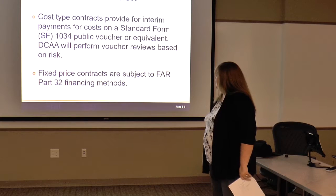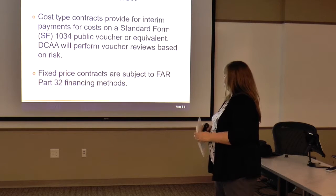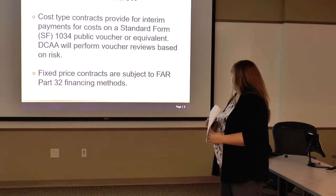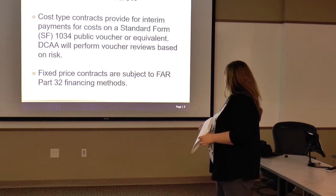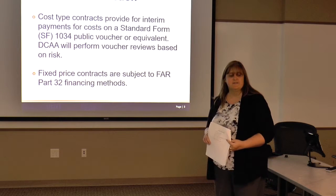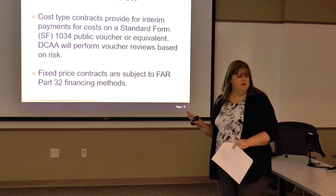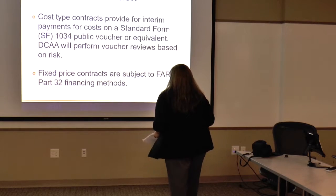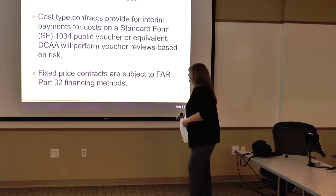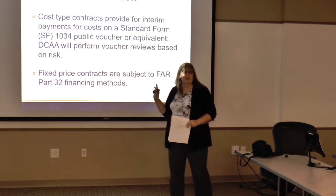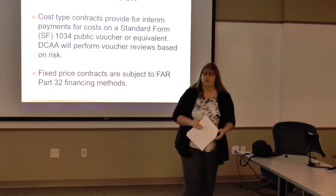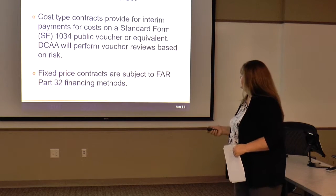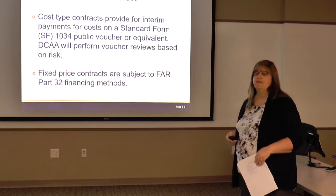Cost-type contracts provide for interim payments for costs on Standard Form 1034. DCAA will perform a public voucher review based on risk. Fixed-price contracts fall under FAR Part 32, and there are different financing methods used for those — progress payments or fixed-price based on a limit. So fixed-price contracts are handled differently.